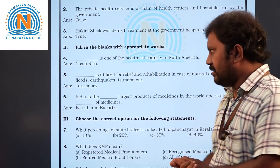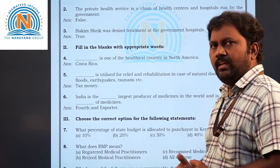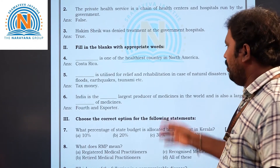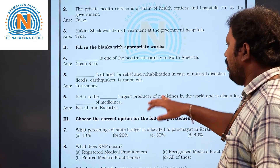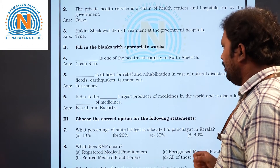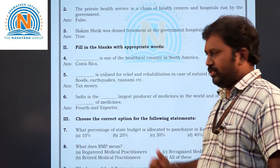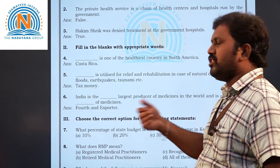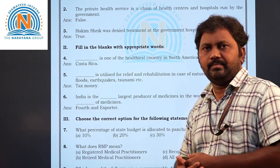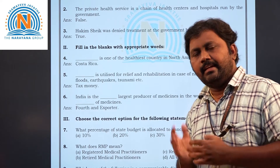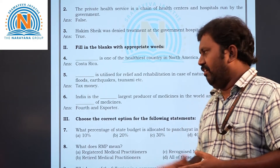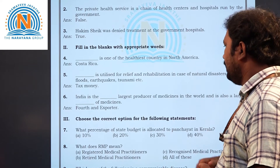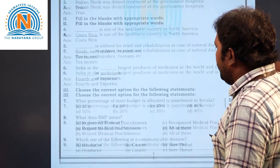Sixth question: India is the blank largest producer of medicine. The answer is fourth largest producer of medicine in the world. India is also the largest exporter of medicine in the world.